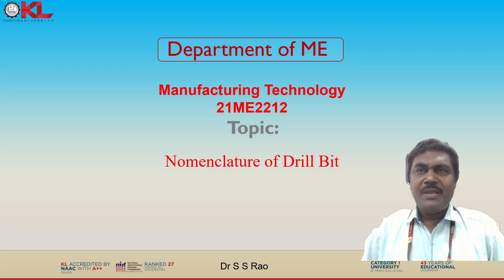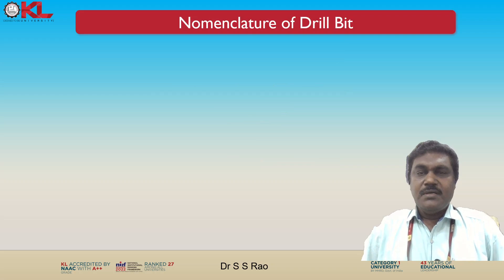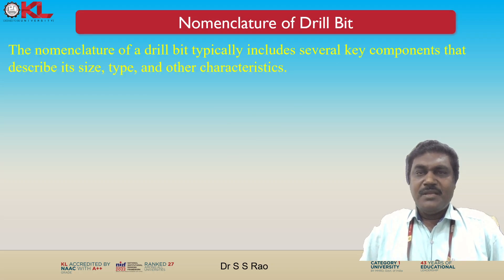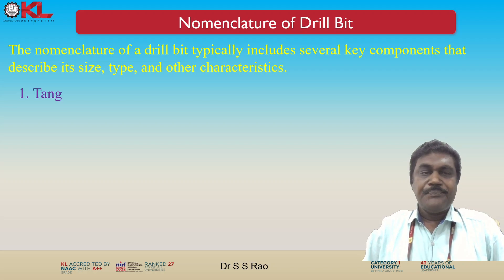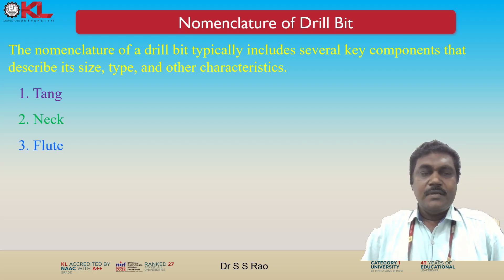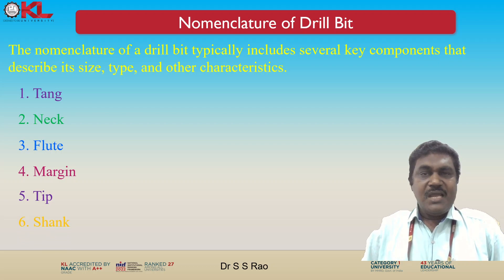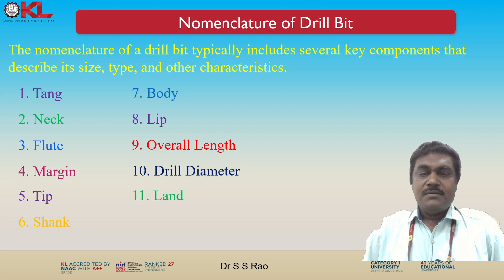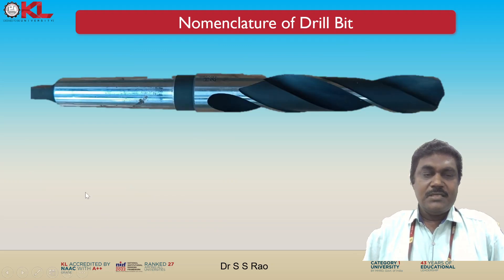In this video I'm going to explain the nomenclature of drill bit. The nomenclature of drill bit typically includes several key components that describe its size, type, and other characteristics. The main components we are going to highlight in this video are the tang, neck, flute, margin, shank, body, lip, overall length, drill diameter, land, and helix angle. You will see each one in detail with the help of the diagram.